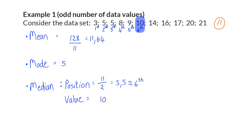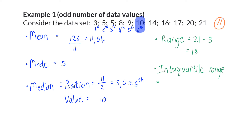Continuing to calculate the measures of dispersion, the range is the maximum minus the minimum value, giving a range of 18 — meaning there is a difference of 18 between the biggest and smallest values. For the interquartile range, we first need Q1 and Q3. The median (Q2) divides the data into two halves. The bottom half has five values; dividing 5 by 2 gives 2.5, which rounds to the third value, so Q1 equals 5.